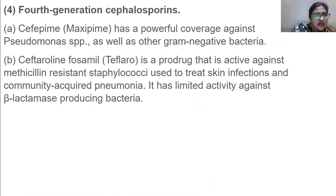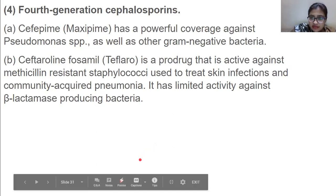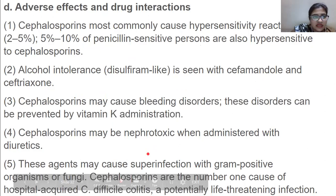For fourth generation cephalosporins, we have cefepime, which has powerful coverage against Pseudomonas species as well as other gram-negative bacteria. Ceftaroline fosamil is a prodrug that is active against MRSA and is used to treat skin infections and community-acquired pneumonia. It has limited activity against beta-lactamase-producing bacteria.